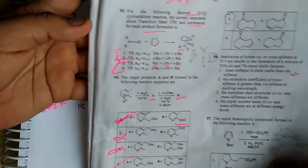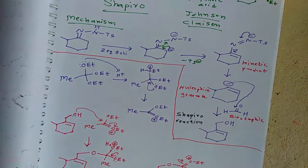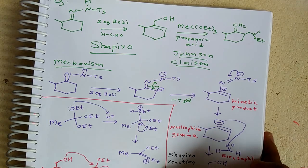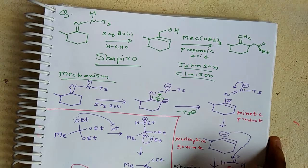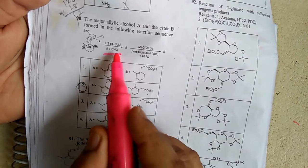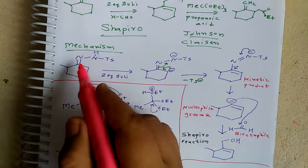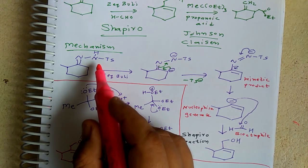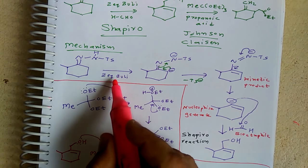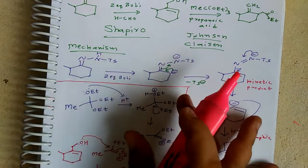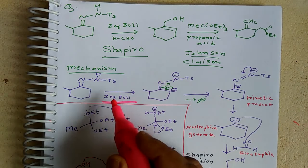This is a tricky question because normally people assume cycloadditions always follow suprafacial-suprafacial, but for ketene and allene it follows suprafacial-antarafacial. This type of reaction is also asked in GATE exams. The next question involves a Shapiro reaction followed by electrophilic addition, and then a Johnson-Claisen rearrangement. A tosylhydrazone is given; when alkyllithium is the base, it is a Shapiro reaction; when an alkoxide base is used, it is a Bamford-Stevens reaction.